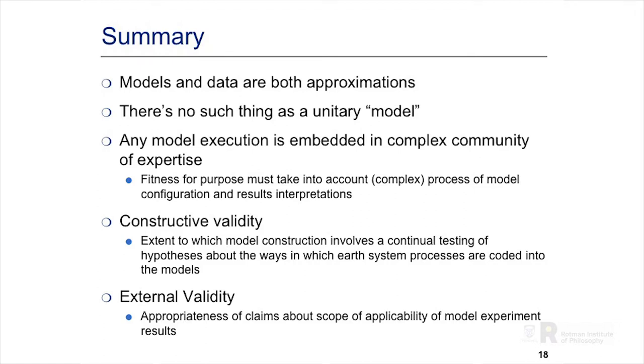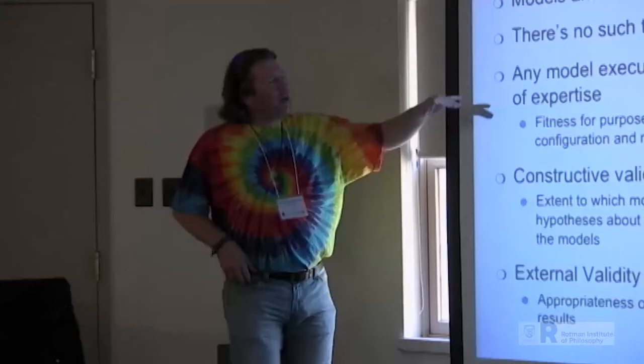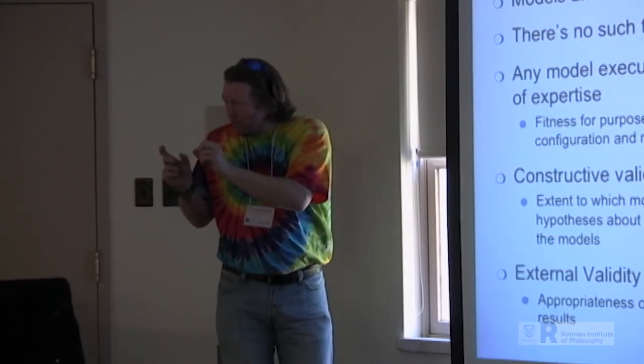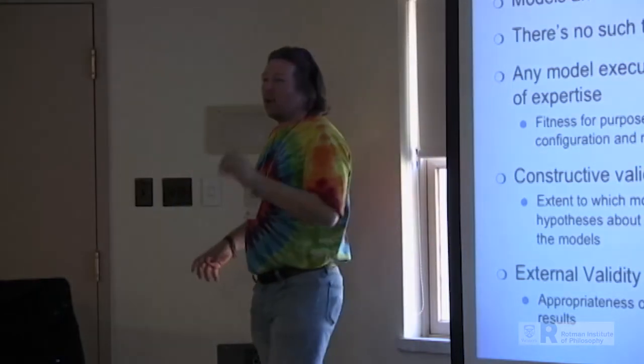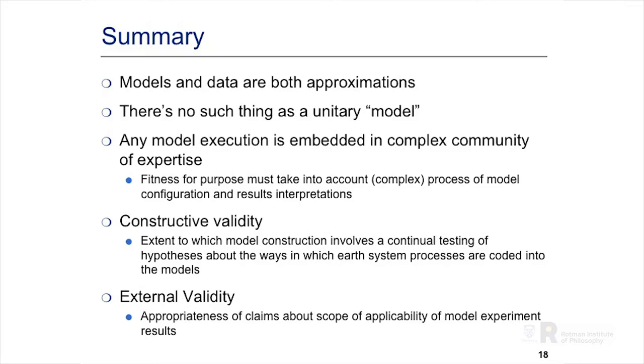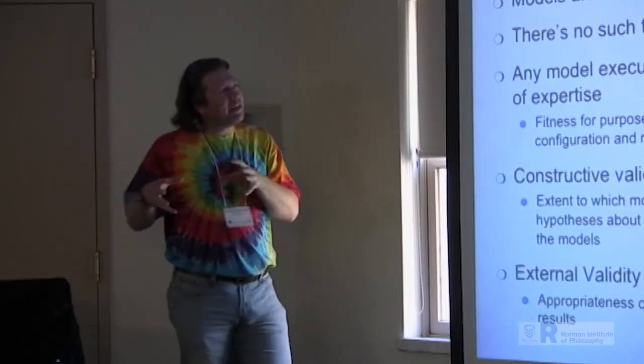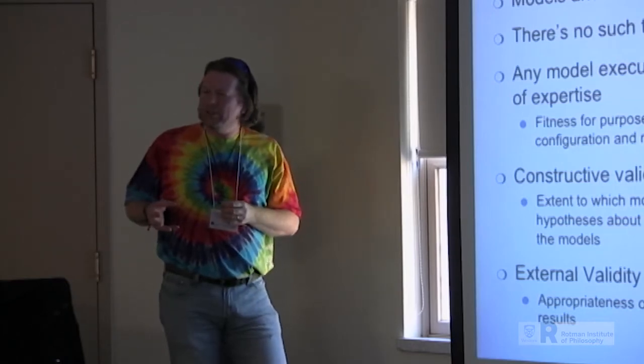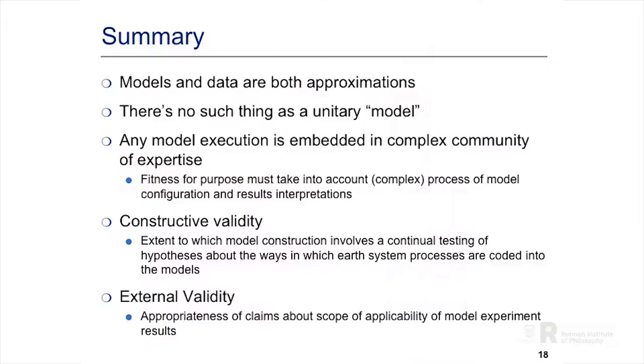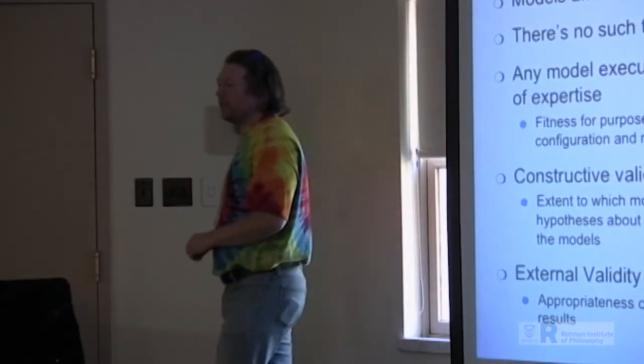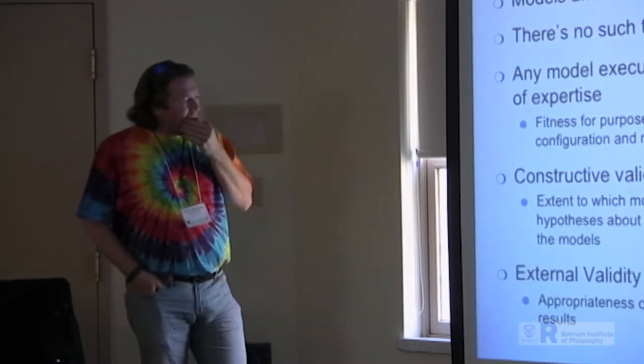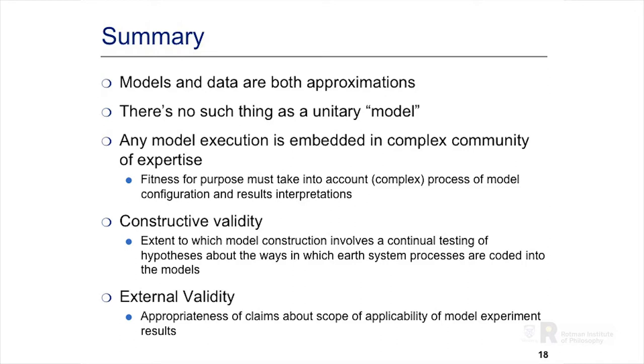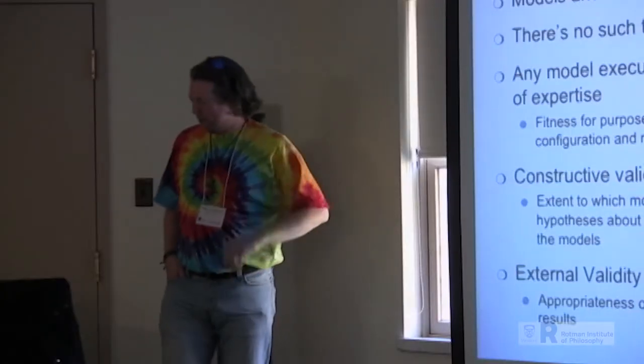So let me move to the summary, then. Models and data are both approximations. Talking about the relationship between them I don't think is very productive, except on the basis of improvements in model skill, not in any absolute sense. There's no such thing as a unitary model. Any individual model is merely one instance of a long chain of development of that model and a particular choice of configuration for an experimental run. So when we talk about validating a climate model, and I say which model, you're going to take several days to answer that question. Any model execution is embedded in this complex community of expertise, so fitness for purpose must take into account the process of model configuration and the way the results are interpreted. We don't ever use raw model results for anything. And then I've suggested two kinds of validity that we might want to look at that I think are being missed at the moment: constructive validity and external validity. And that's where I'll stop. Thank you.